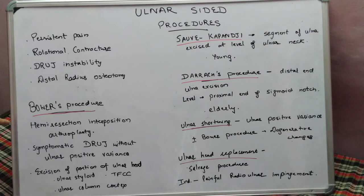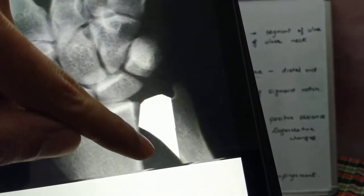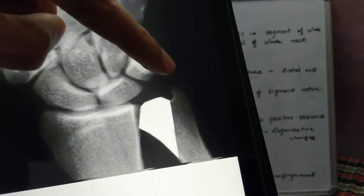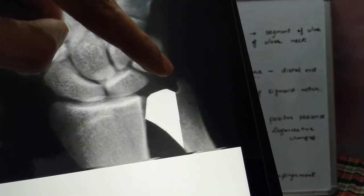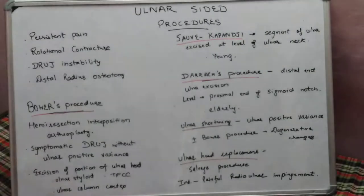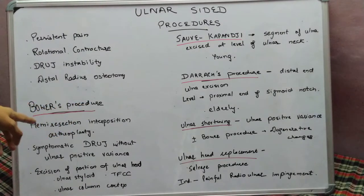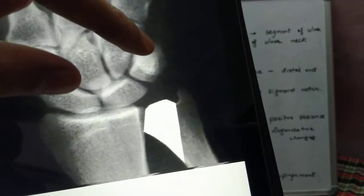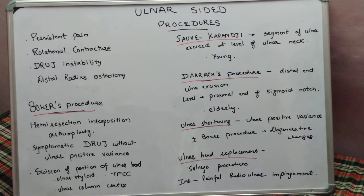In the Bowers procedure, the substantial part of the ulnar head is resected, while the ulnar styloid, part of the TFCC, and ulnar column cortex are preserved. It is also an interposition arthroplasty — a flap of the wrist capsule is interposed in this area.